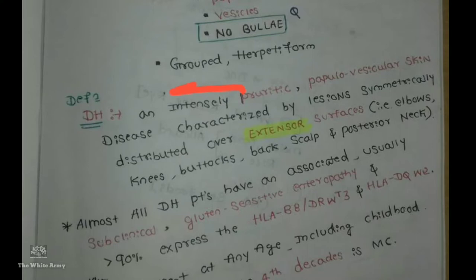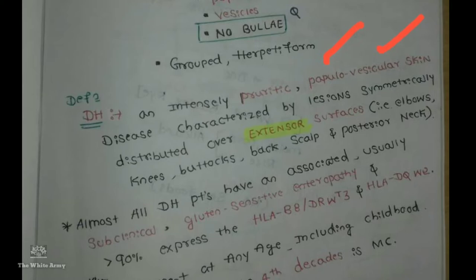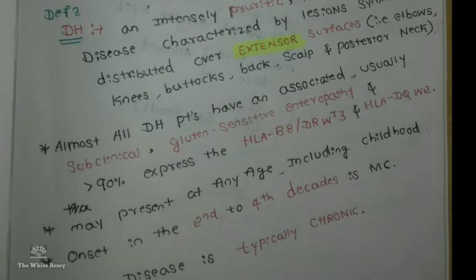Dermatitis herpetiformis can be defined as an intensely pruritic papulovesicular skin disease characterized by lesions symmetrically distributed over the extensor surfaces like elbows, knees, buttocks, back, scalp, and posterior of the neck.